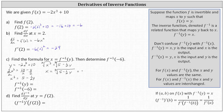Because the index is odd, we do not include a plus or minus. And we have x equals the cube root of five minus one-half y. We could also write this as the quantity five minus one-half y raised to the one-third power. Because x equals f inverse of y, we now know f inverse of y is equal to the cube root of five minus one-half y.